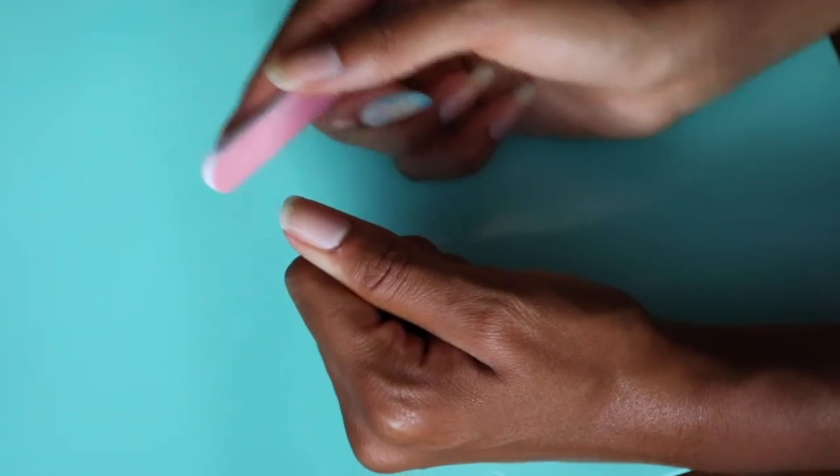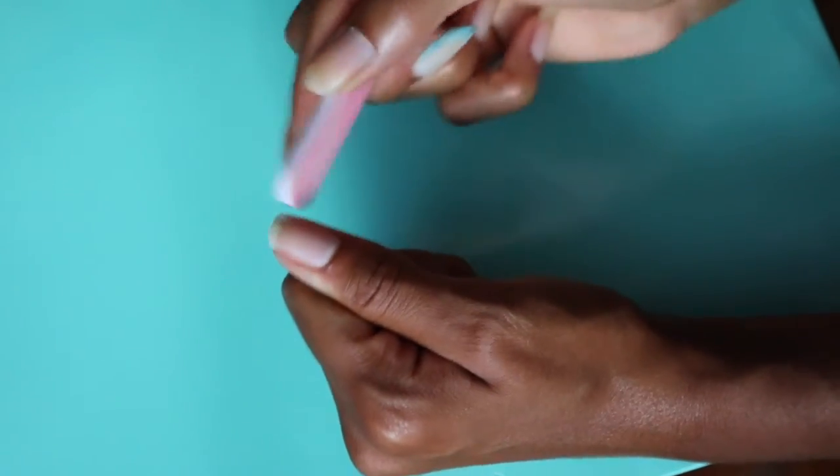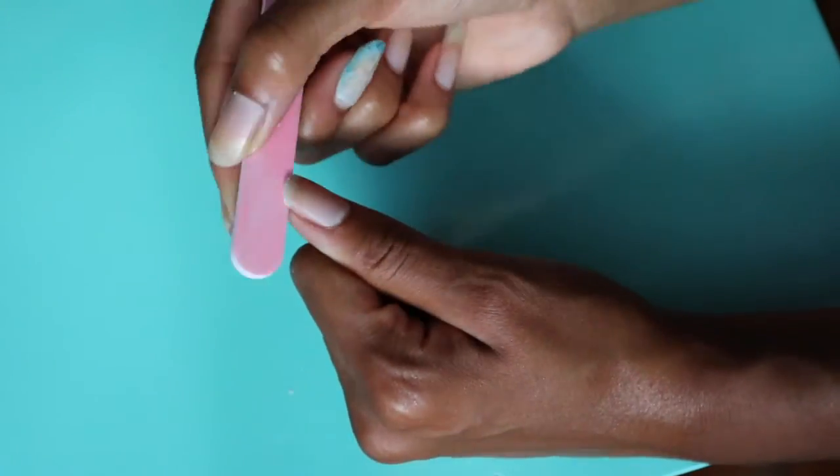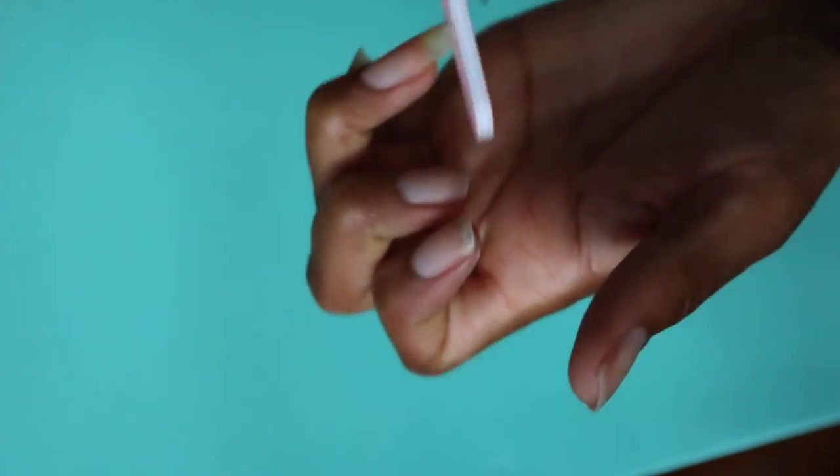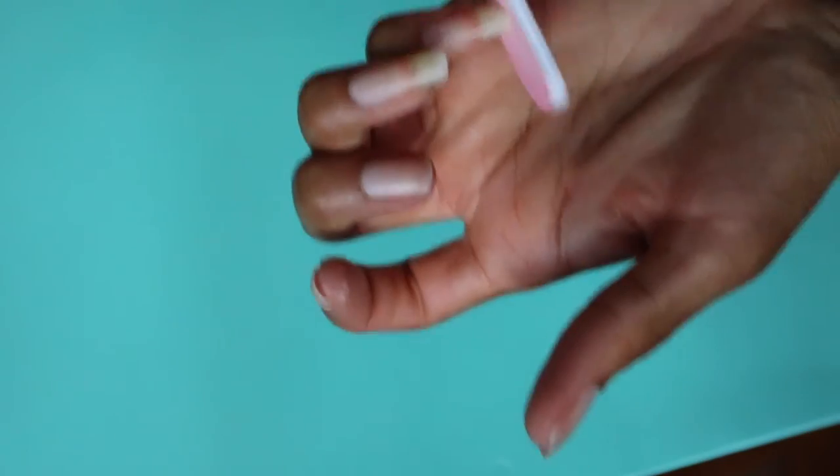And then I file my nails. I only file, I don't cut them. You file in one direction because if you saw them it makes them weak and brittle. You don't want that, you want strong nails. So just file in one direction. I really want to get a glass nail file.